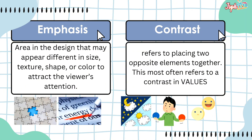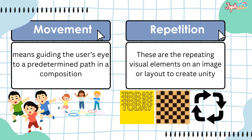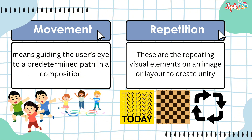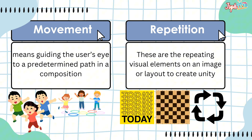Emphasis refers to areas in the design that may appear different in size, texture, shape, or color to attract the viewer's attention. Contrast refers to placing two opposite elements together — this most often refers to a contrast in values. Movement means guiding the user's eye along a predetermined path in a composition, while repetition uses repeating visual elements in an image or layout to create unity.